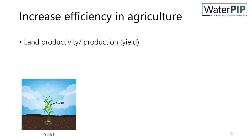With increasing demand for food production, there's an increasing pressure on the available land and water resources. With expanding agricultural areas becoming less viable, the focus is shifting to increasing the efficiency of existing agricultural lands through improving productivity in terms of increasing yield per area. One of the main inputs needed to increase this productivity is water, which is also a scarce resource.